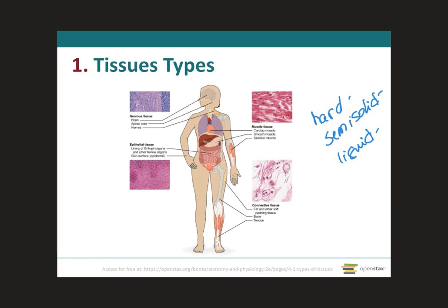The study of tissues is termed histology. And if there is anything wrong with a patient, the doctor that examines the tissues and cells under a microscope and tries to make an accurate diagnosis is called a pathologist. The removal of a sample of tissue for analysis is termed biopsy, and it can either be removed surgically or through a needle in case that it's a liquid tissue.